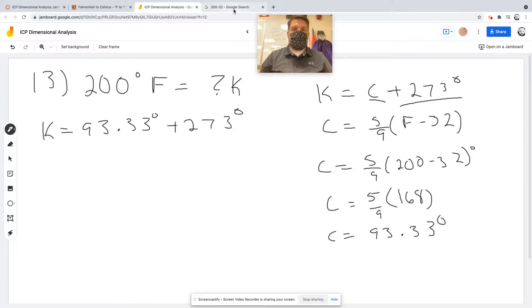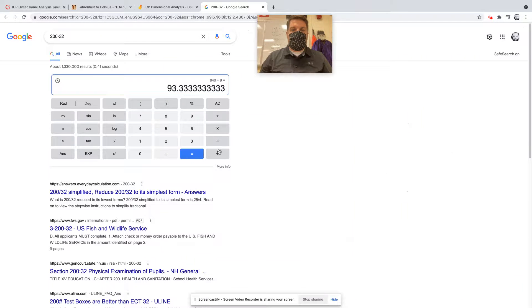So I'm just going to take this same number right here, and I'm going to add 273. So I get 366.3.